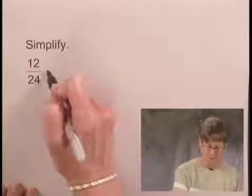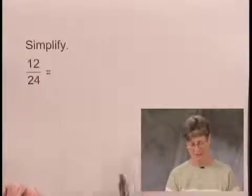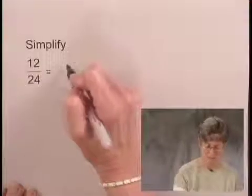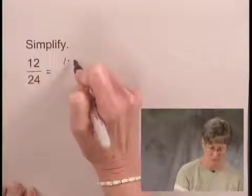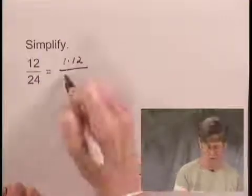I could factor 12 and 24 into their prime factorizations, but when I look at these two numbers, I see that 24 has a factor of 12. So I'm going to write 12 as the product 1 times 12, and I'm going to write 24 as 2 times 12.